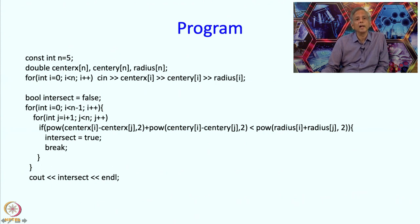So if I find that the centers are closer than the sum of the radii or the squares of the distance between the center is less than the sum of the radii squared, then I know that the intersection is happening and therefore I am going to set intersection equal to true. And the moment I find that an intersection is happening, I can break. Because my variable intersect is only going to take values false or true and I have found a true value, I have found an intersection and I must report that.